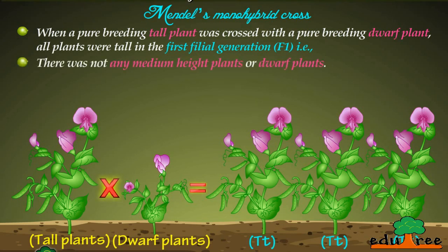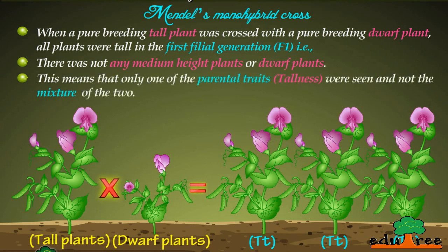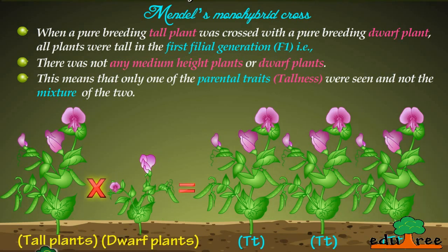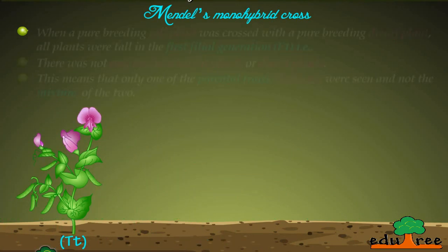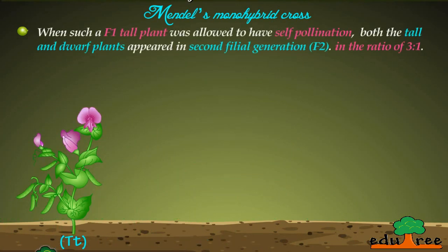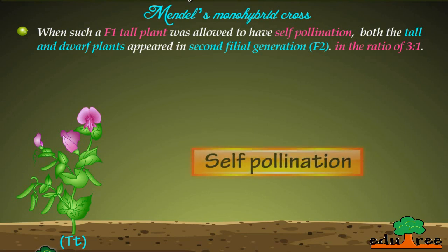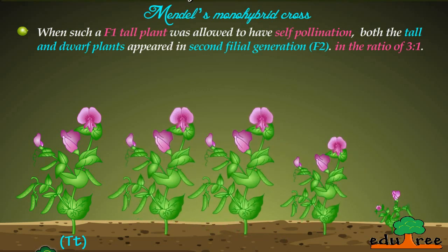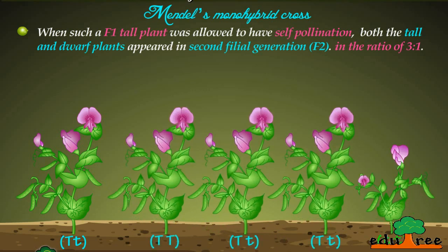There were no medium height plants or dwarf plants in F1 — only tallness was seen, not a mixture of the two. When such an F1 tall plant was allowed to self-pollinate, both tall and dwarf plants appeared in the second filial generation, called F2, in the ratio of 3 to 1.